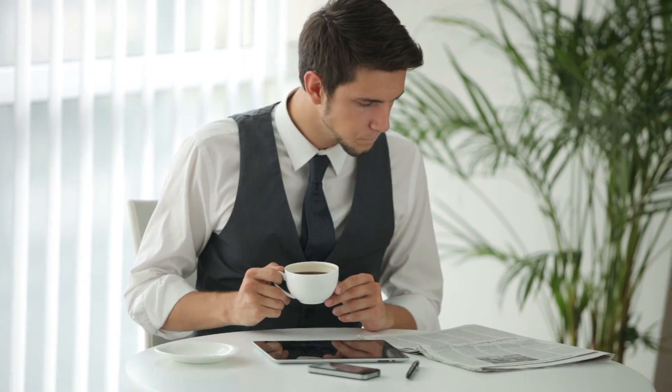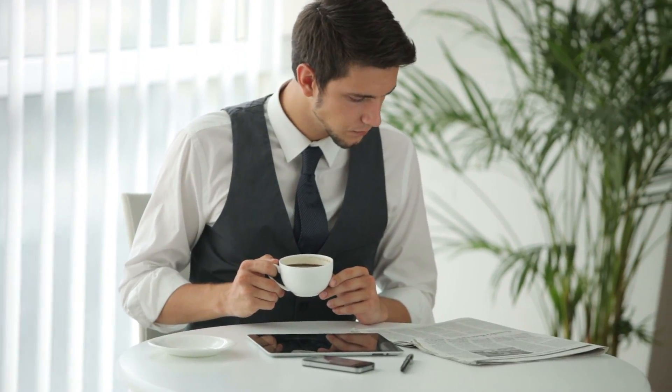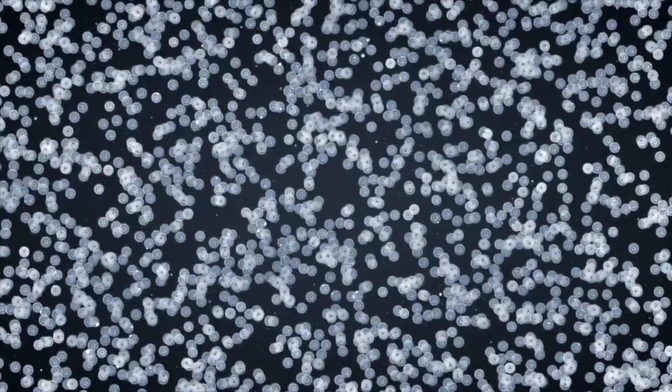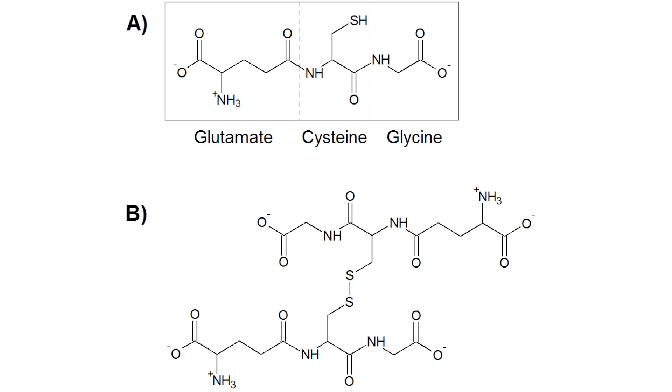Why? Because it exists in virtually every single cell within our body — an extremely unique thing. And it's made up of three very simple amino acids: cysteine, glycine, and glutamate. Those three aminos together create this wonderful glutathione that has such a powerful detoxing impact on the body that we practically couldn't live without it.